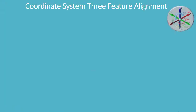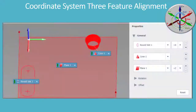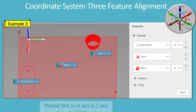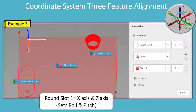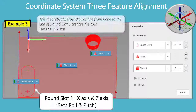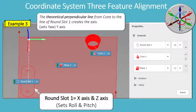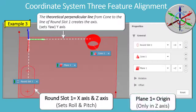Coordinate System Three Feature Alignment: Round Slot 1 equals X-axis and Z-axis, sets roll and pitch. The theoretical perpendicular line from the cone to the line of Round Slot 1 creates the axis and sets yaw on the Y-axis. Plane 1 equals origin, only in Z-axis.